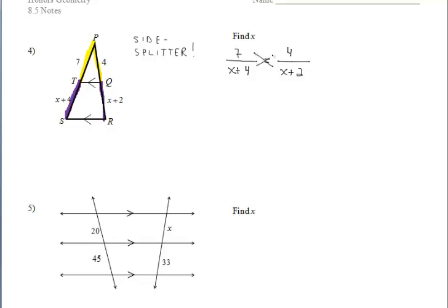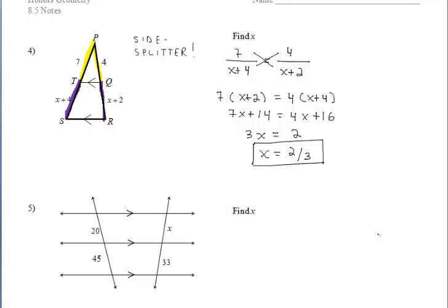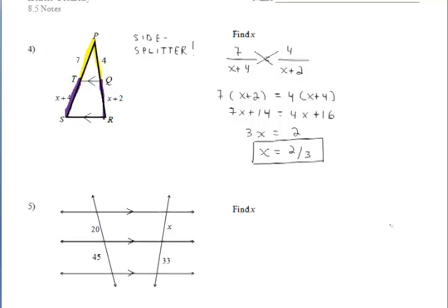For example 4, we should be working with side splitter. You should have set up a proportion similar to that one. And you should get that X has a value of 2 thirds.